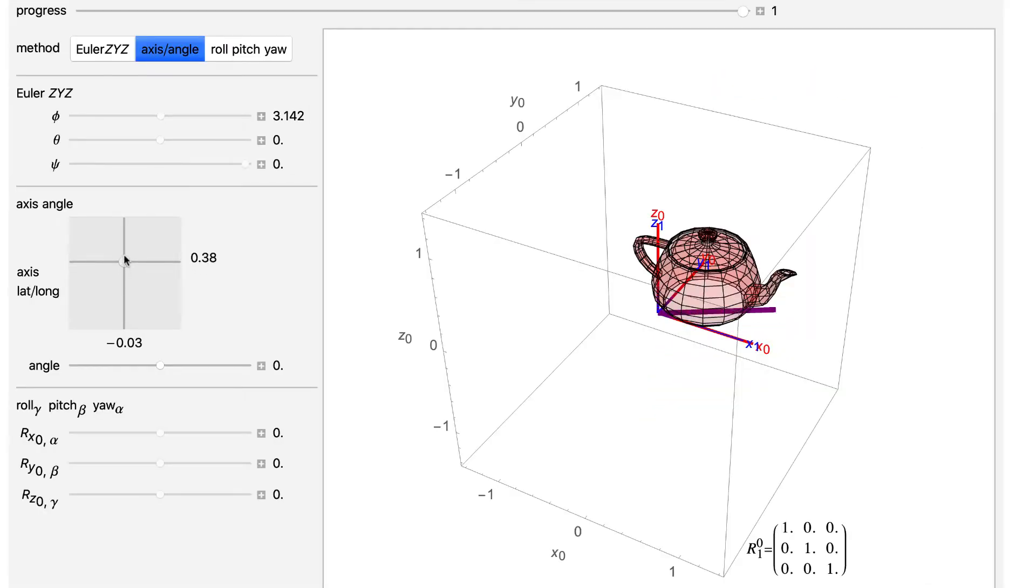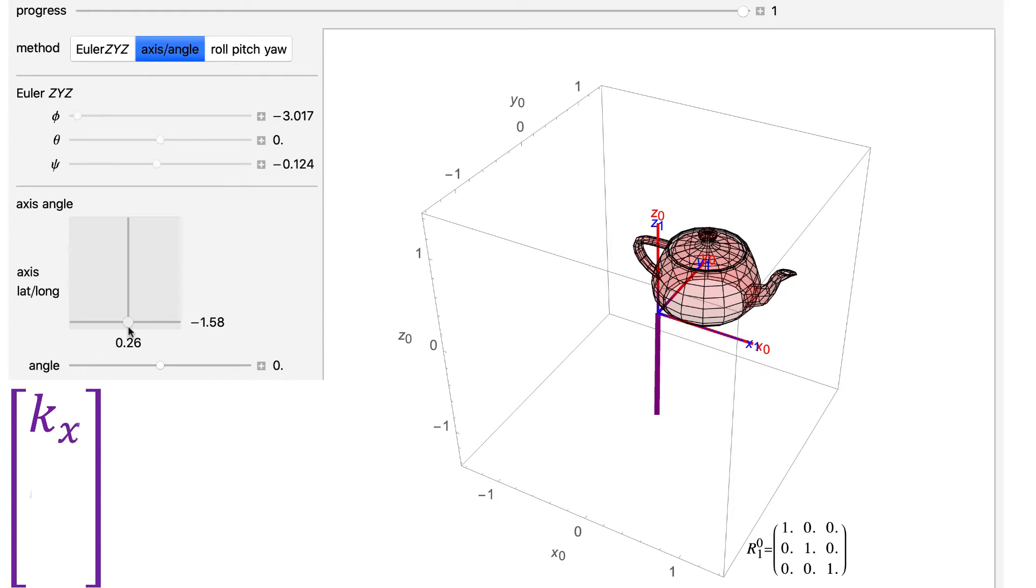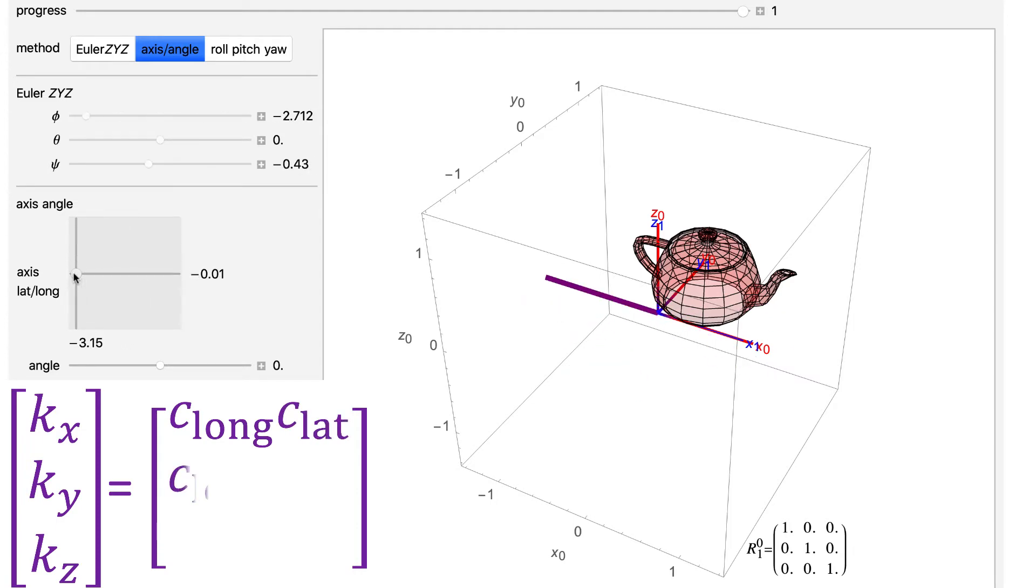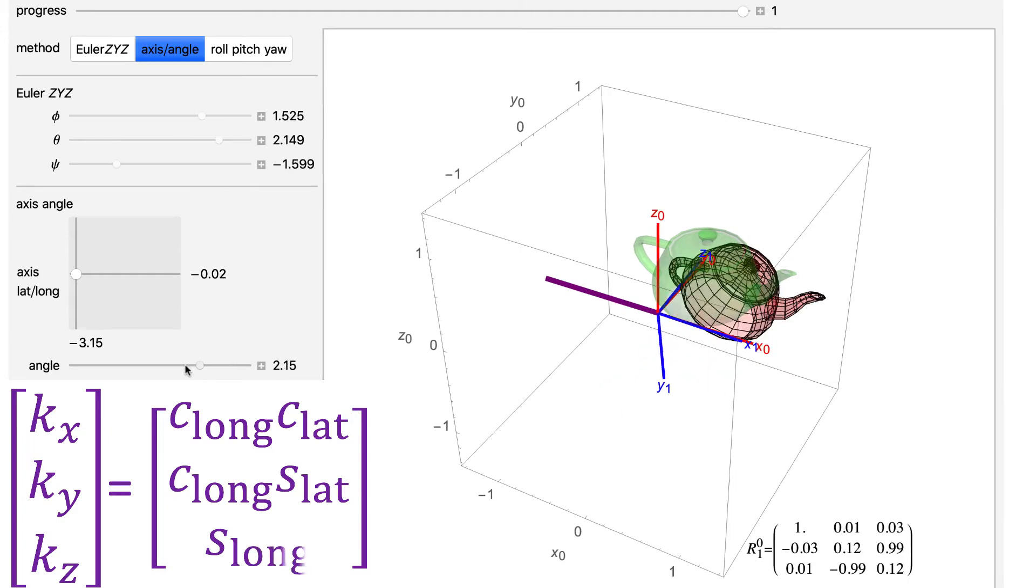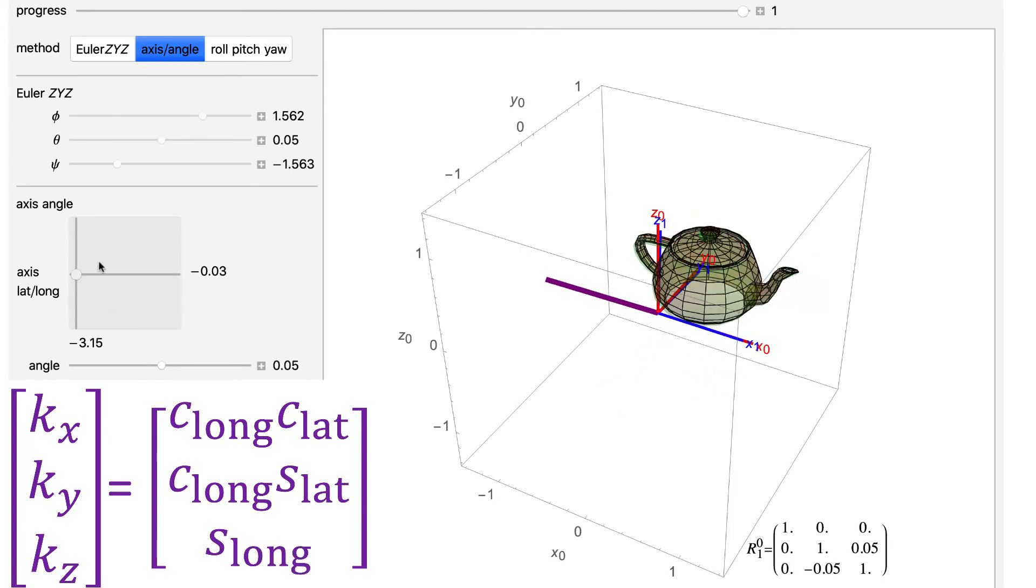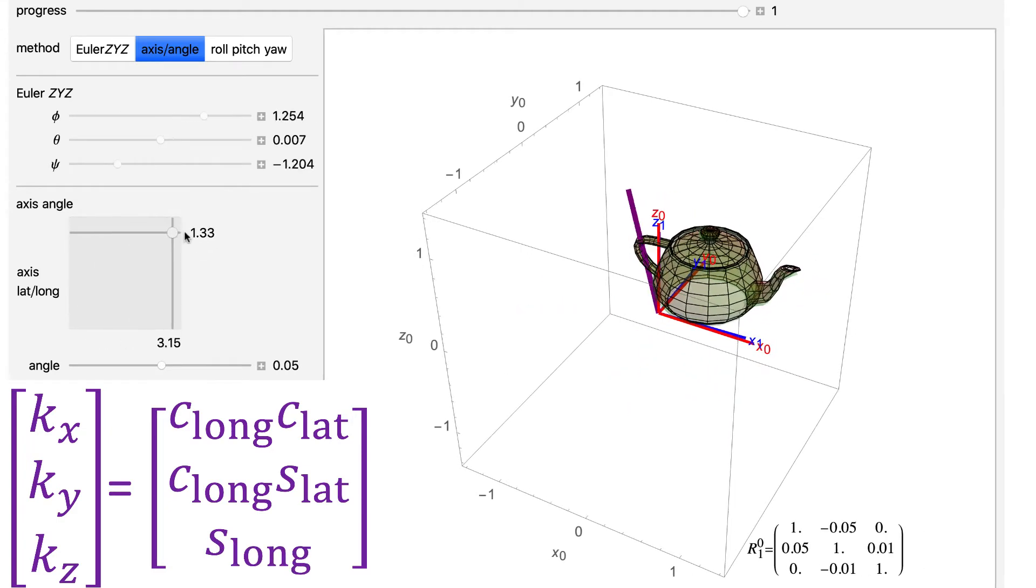You can understand this because this again gives only three parameters by representing k by the two-parameter latitude-longitude pair. And so for k, the x-coordinate is the cosine of the longitude times the cosine of the latitude. The y-coordinate is the cosine of the longitude and the sine of the latitude, and the z-coordinate is the sine of the longitude.